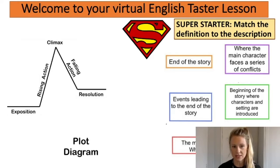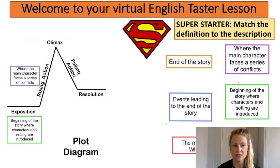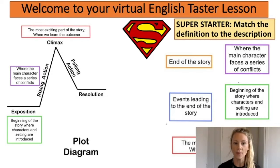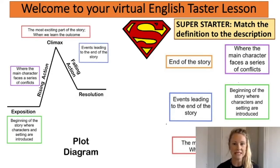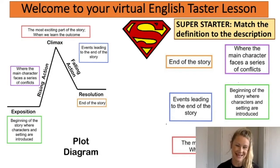I'm now going to go through the answers with you. Hopefully you came up with the following: the exposition is the beginning of the story where characters and setting are introduced. Then we move on to the rising action where the main character faces a series of conflicts. The climax is the most exciting part of the story where we learn the outcome. Then we have some falling action which is the events leading to the end of the story. Finally we have the resolution, which is the end of the story. The resolution doesn't have to be happy — it just has to satisfy the reader that they know how the story has been tied up.